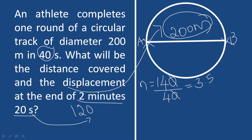For the distance covered in one full circle, we use the formula 2πr. The circumference equals 2 × (22/7) × r. Since the diameter is 200 meters, the radius r is 100 meters. So the distance for one round is 2 × (22/7) × 100, which equals approximately 628.57 meters per round.